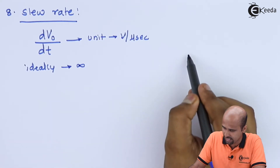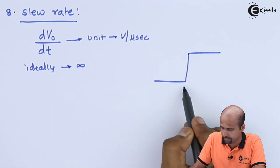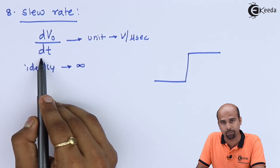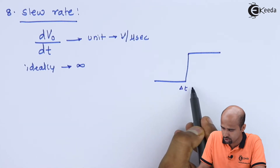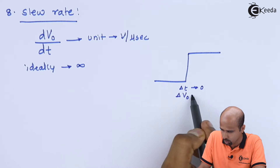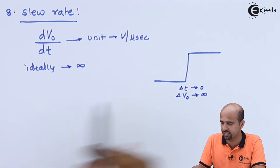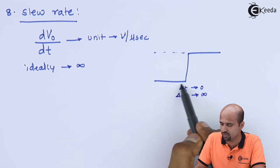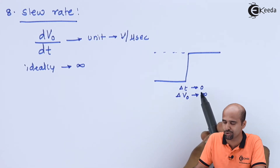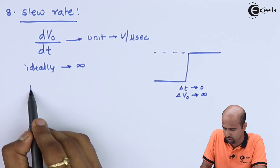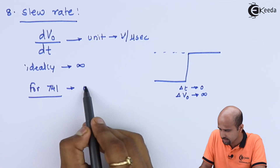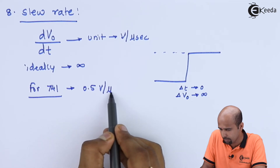To achieve infinite slew rate, delta T should tend towards zero and delta Vo should tend towards infinity. Infinity is not practically possible, so we aim for as high a slew rate as possible. For 741, the slew rate is 0.5 volts per microsecond, which is actually acceptable as far as low-power technology is concerned.